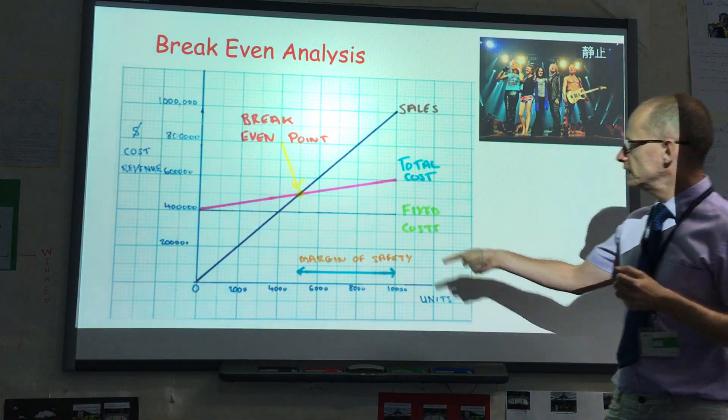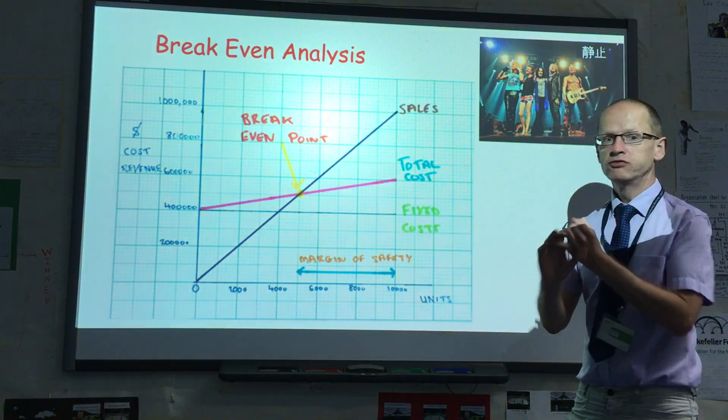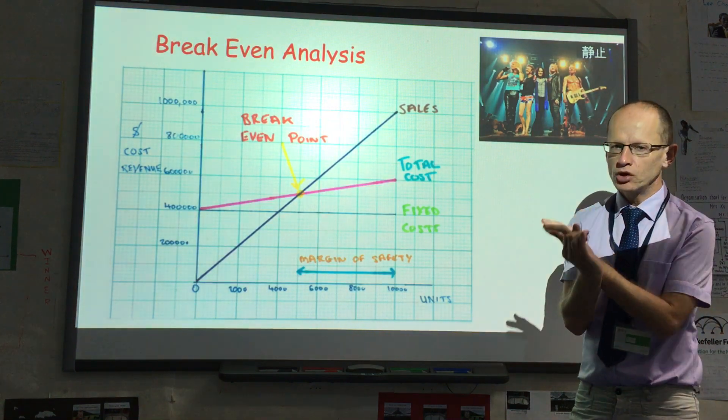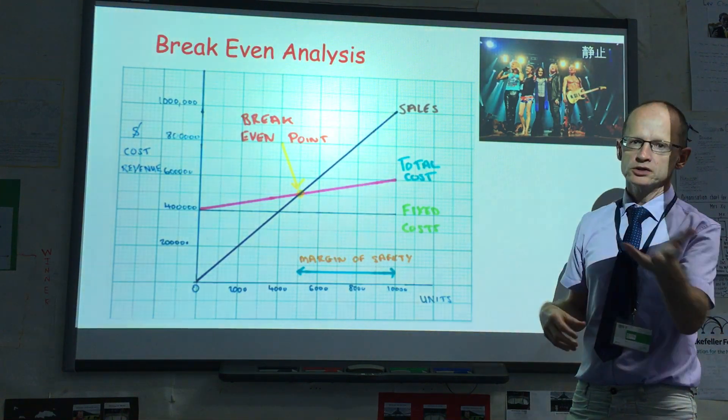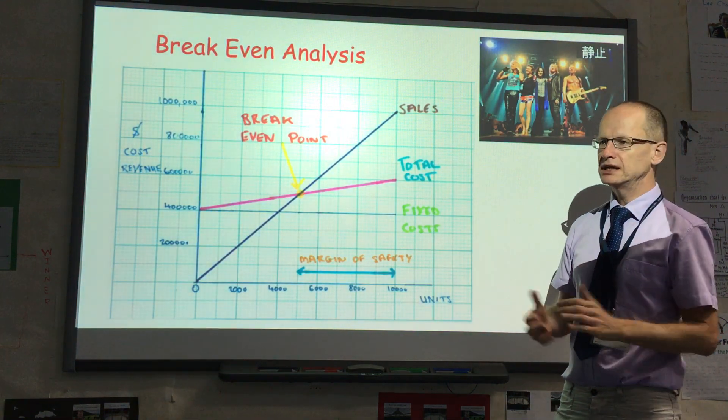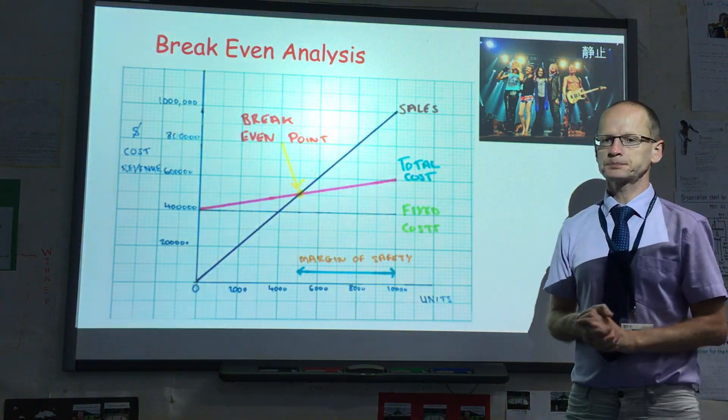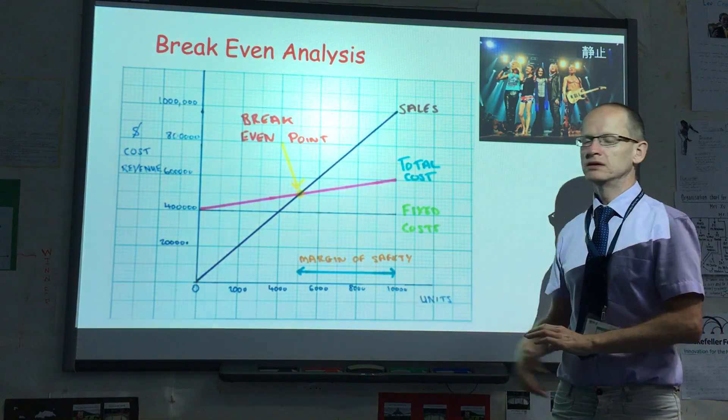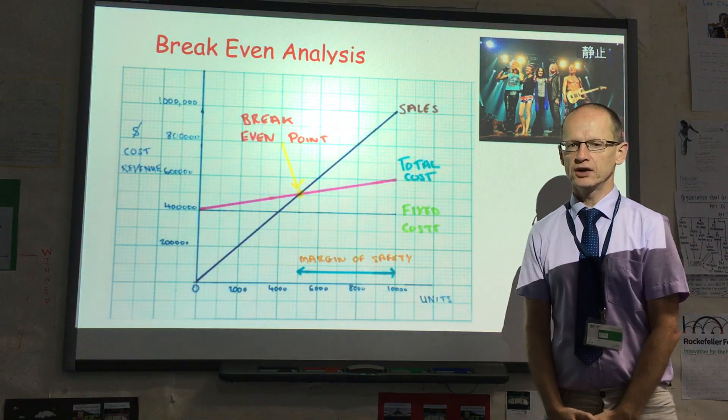So what I've assumed is that fixed costs are $400,000, the variable costs are $20 per ticket, and that the selling price per ticket is $100, and that the size of the concert venue is 10,000.